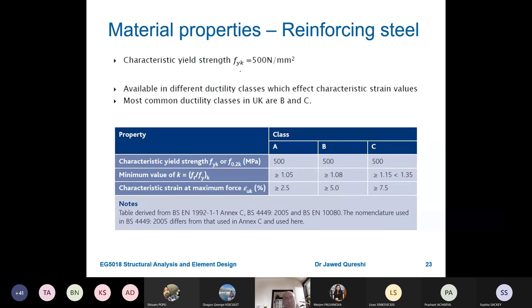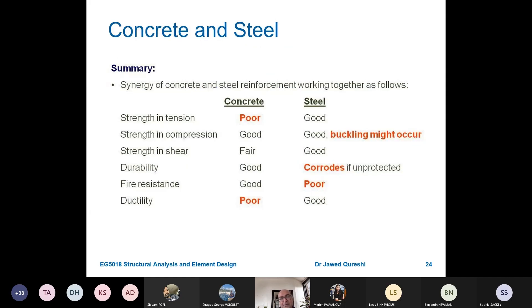The yield strength of reinforcing bar, its fyk or yield strength is 500 Newton per millimeter square. It has got different ductility classes. Here we have comparison of concrete and steel from strength's perspective. Strength in tension of concrete is really poor, almost certainly you will ignore its strength. On the other hand steel is very strong.